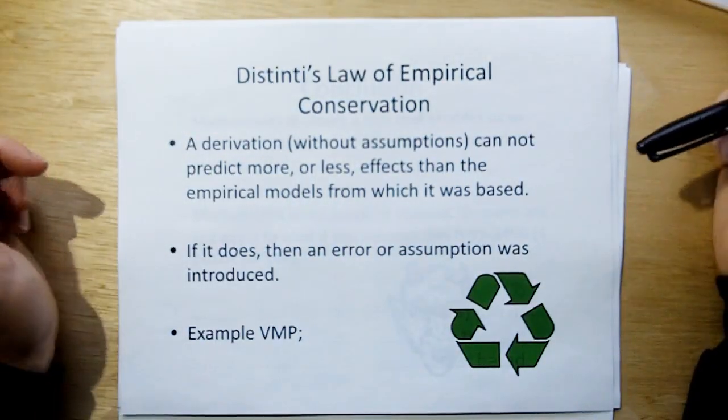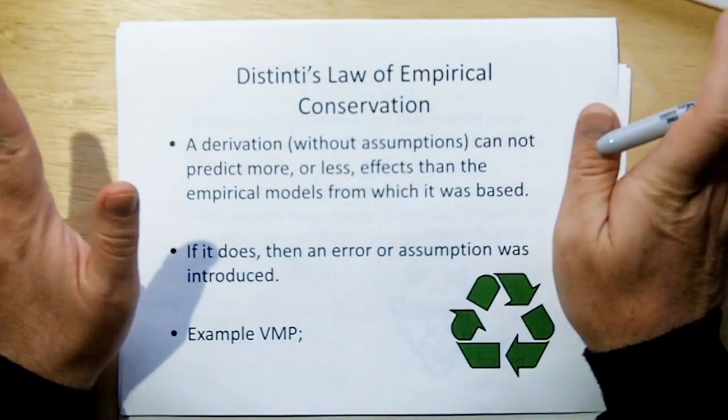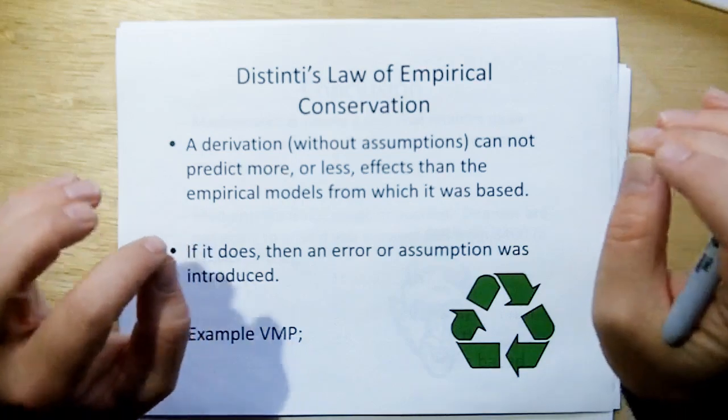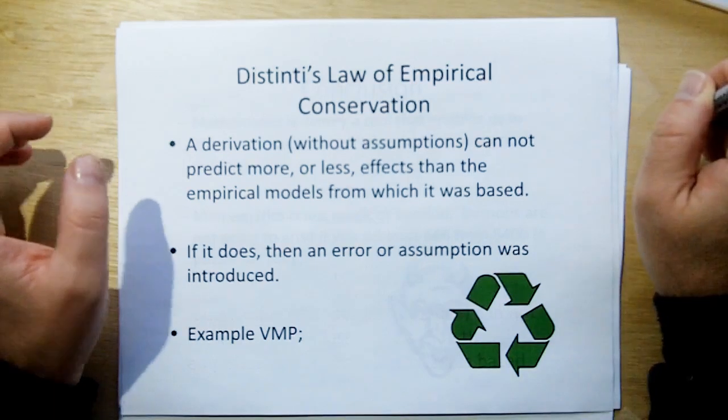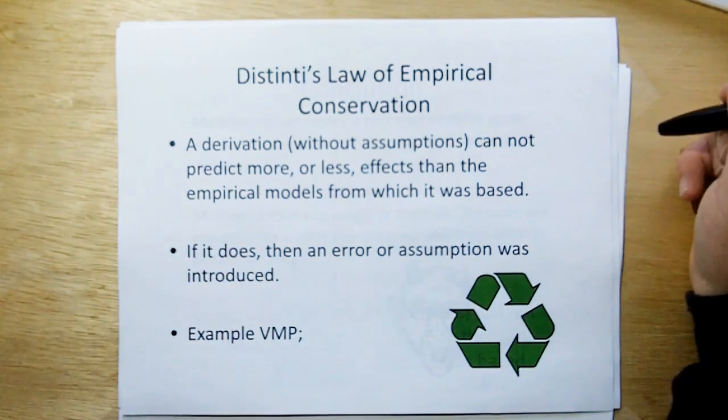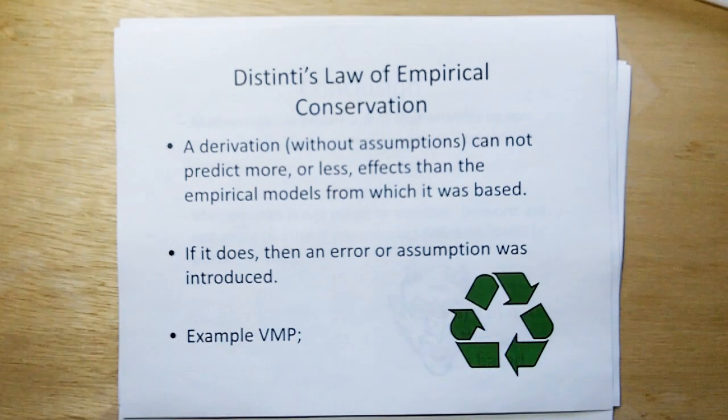So here's Distinti's law of empirical conservation. A derivation that doesn't have assumptions, in other words, we're deriving just on pure empirical models, cannot predict more or less effects than the empirical models from which it was based. If it does, then either an error or an assumption was introduced somewhere along the way. And let me give you an example of vector magnetic potentials. When I was initially looking into induction 20 years ago, somebody said to me, oh, we can easily solve all that with vector magnetic potentials. And I looked, and I'm like, wait a minute, vector magnetic potentials is derived from Faraday's and the other law, the magnetic field laws, models. How can it predict more?